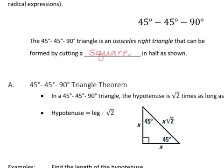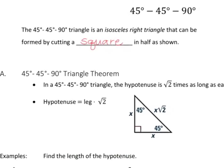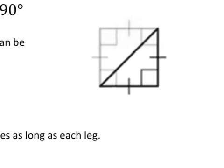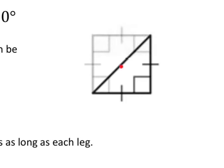The 45-45-90 triangle is an isosceles triangle that can be formed by cutting a square in half. If you look at this picture here, if you are drawing the diagonal of the square, you're forming an isosceles right triangle, and so the angles would be 45, 45, and 90.